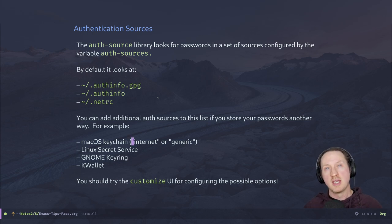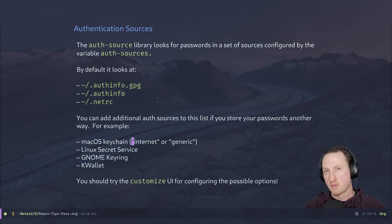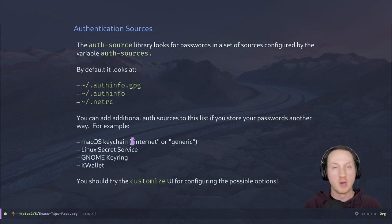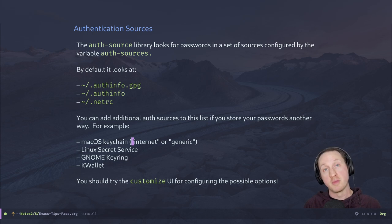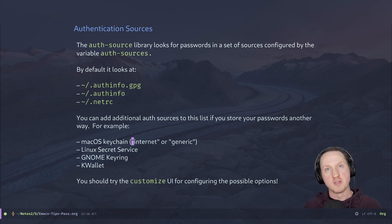On Linux there is the Secret Service, a generic service for storing passwords for various services. The Linux Secret Service is a generic layer over other possible keyrings — for example, the GNOME Keyring or KWallet. These desktop environments have their own ability to store passwords and GPG keys. The auth-source library can interface with those as well. However, in my opinion it's better to have control over where passwords get stored, and with these bigger keychains you don't have as much visibility into what's being stored.